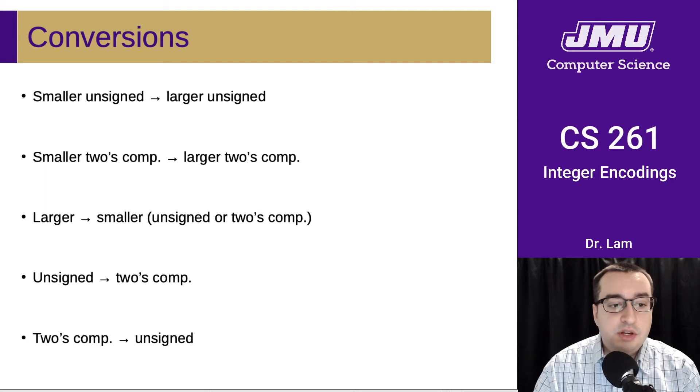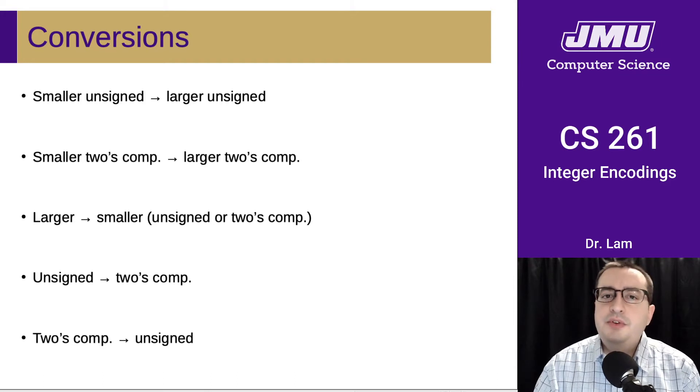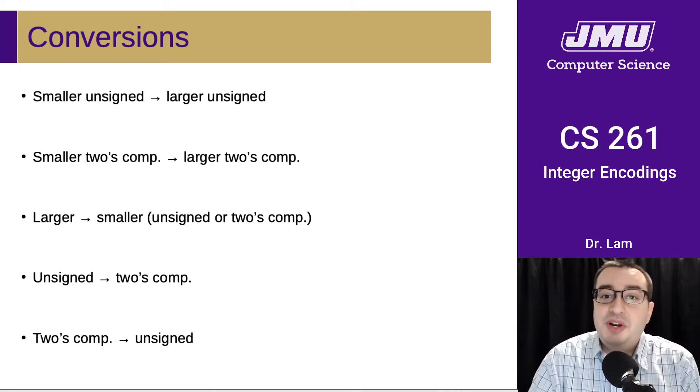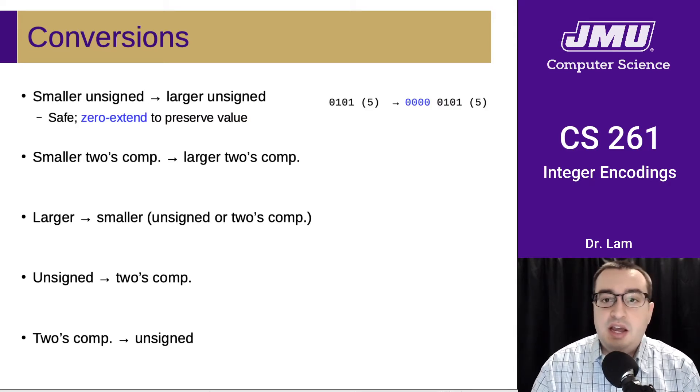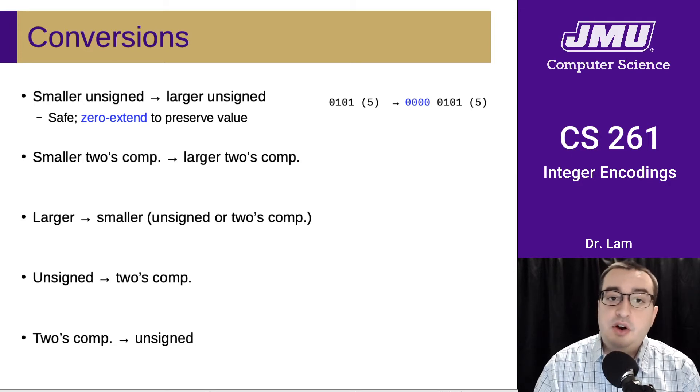Okay, so let's work through each of these in turn. Think about converting from a smaller unsigned format to a larger unsigned format, maybe going from four bits to eight bits. Hopefully the intuition is that this is going to be safe, because you can always represent the same numbers in the larger format. You'll just have more numbers that you can represent. In order to convert from the smaller number to the larger number, you just pad it with zeros at the beginning. This is called zero extension.